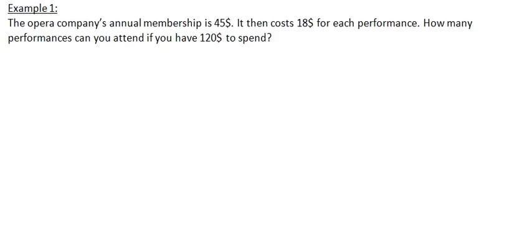When solving this problem, we first have to define our variables and create an algebraic expression. We have to see what can change and what cannot change. What can change is the number of performances you can attend, and that will affect the total cost. We'll set C to be our total cost since that is something that can change. We'll also set P as the number of performances, because that will also change.